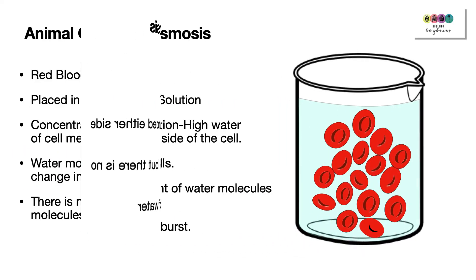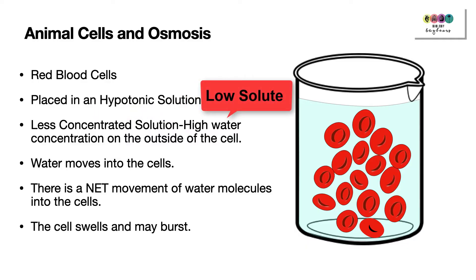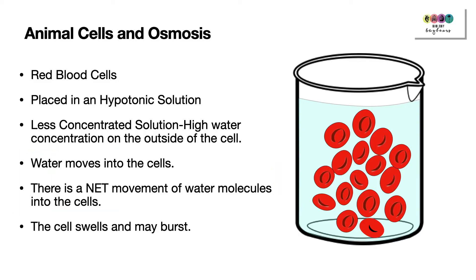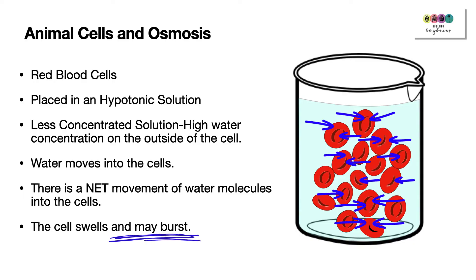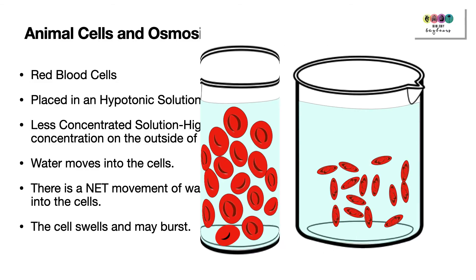What happens if you place red blood cells into a hypotonic solution? Hypotonic means lots of water and low solute concentration — a very watery solution. There would be a net movement of water towards the solutes, which in this case are inside the cell cytoplasm. So there will be a net flow of water from the beaker into the red blood cells, and if too much water enters, the cells can swell and burst. This is why hospitals give saline drips rather than pure water.